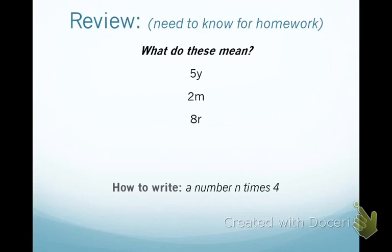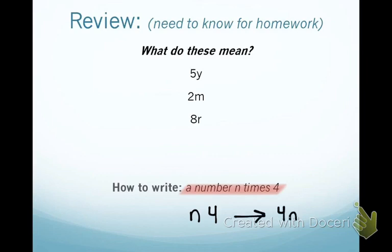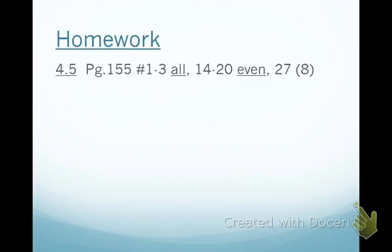This review will help you for tonight's homework. What does 5Y mean? 5 times Y. What does 2M mean? 2 times M. What does 8R mean? 8 times R. If your homework says a number N times 4, we always put the coefficient first, so it would be written as 4N. Tonight's homework has just 8 problems. Make sure you write that down.